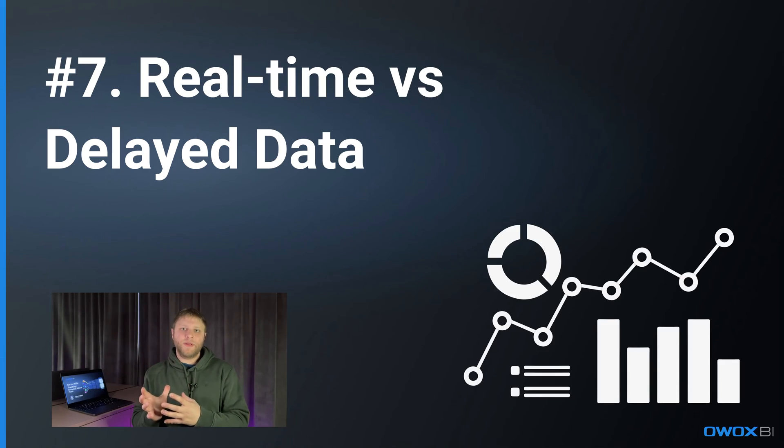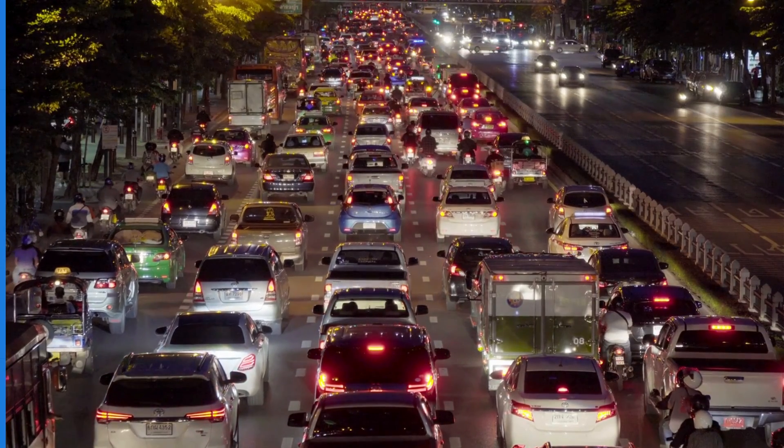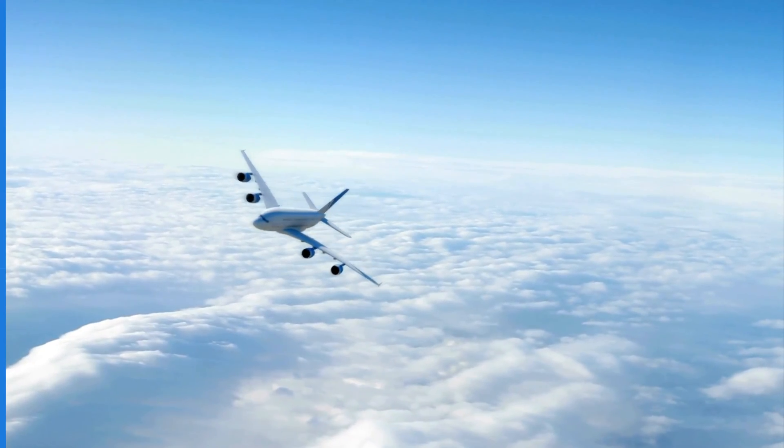Difference number seven: speed of decision-making. With client-side tracking, you are often stuck in traffic — data collection delays are common, so you can't make fast marketing decisions based on data. Server-side tracking changes the speed game, just like a private jet versus a bike. This means instant insights, faster responses, and decisions made at the right moment. Server-side is all about speed and timeliness in data handling.